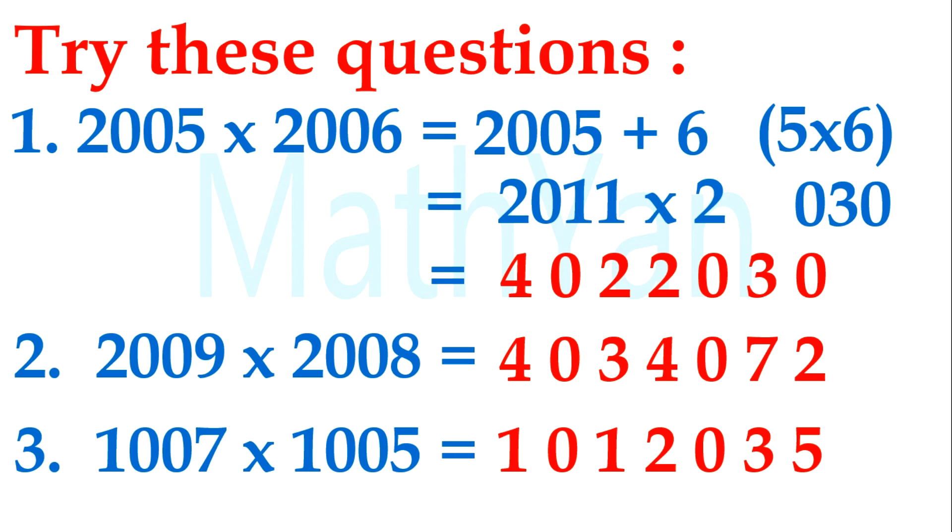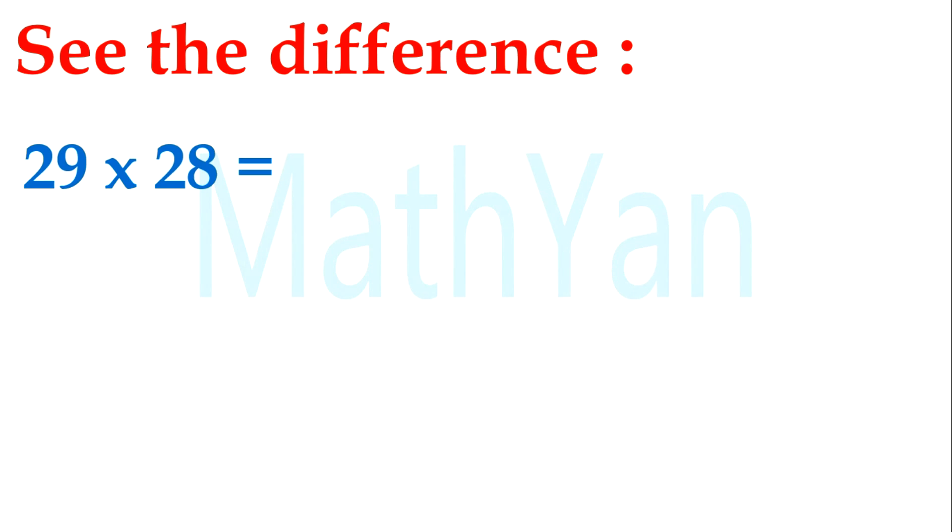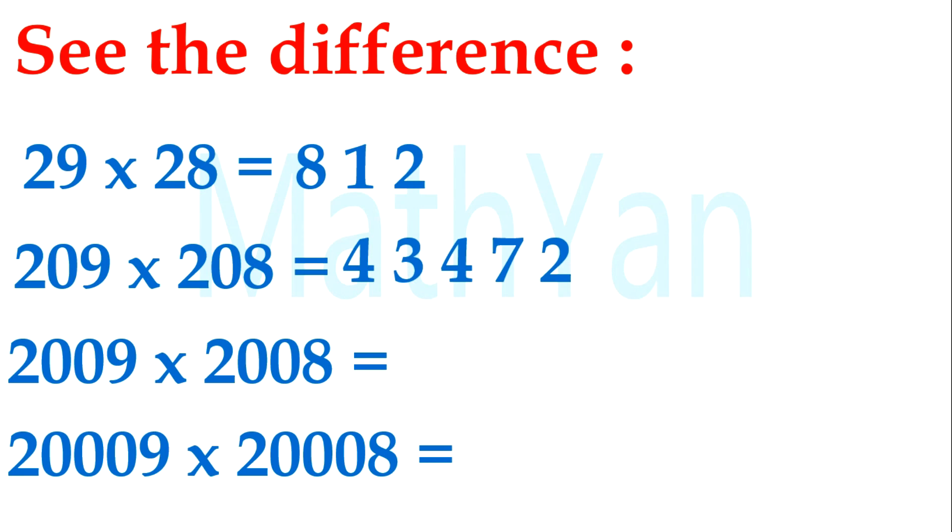You can see the difference here. 29 times 28 is 812. This is 43472, 4034072, 40034072. For the second, third, and fourth question, you can see the difference. Behind is 72, the same, but front number just adds 0 in between, 0 in between, 0 in between.